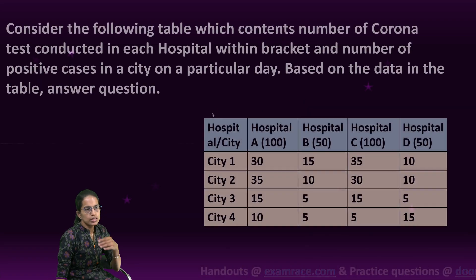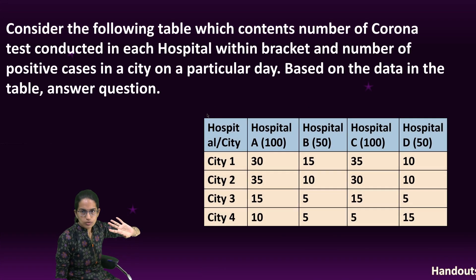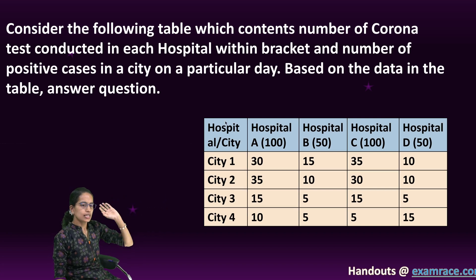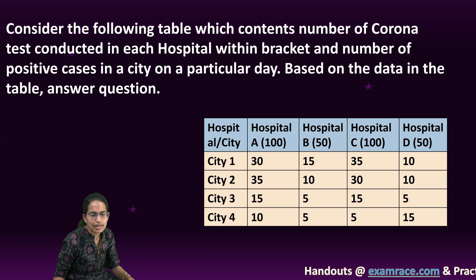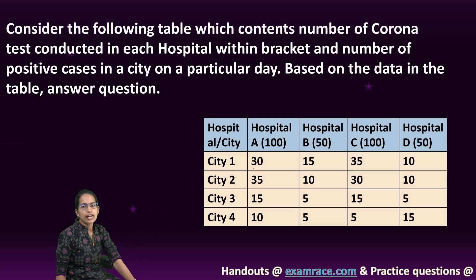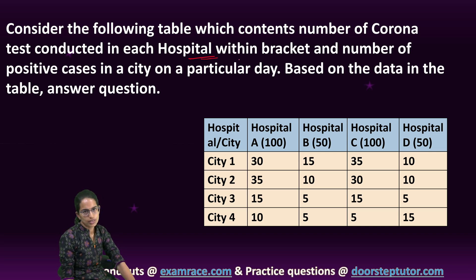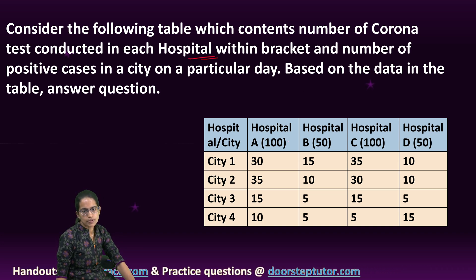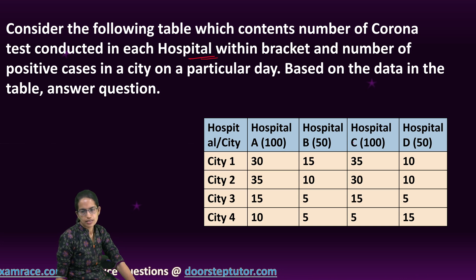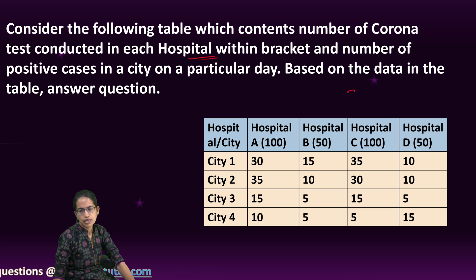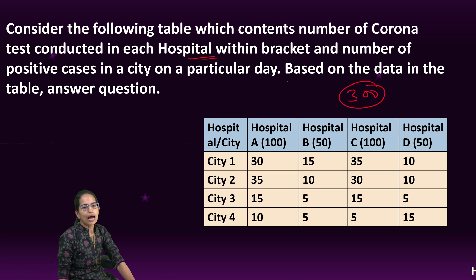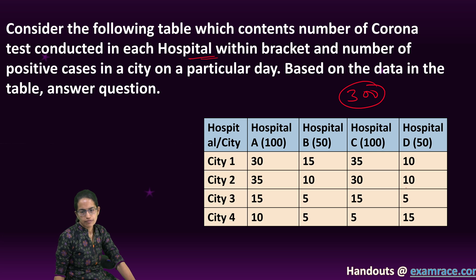Those were the questions based on one of the sets. The second set had a different topic — the number of corona tests being done in each hospital. Across each hospital, how many tests were done is given in the bracket: 100, 100, 50, 50 — so total 300 tests were done across four cities. How many came positive is written in the values.